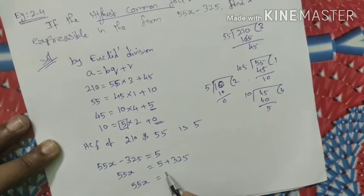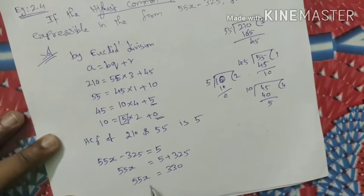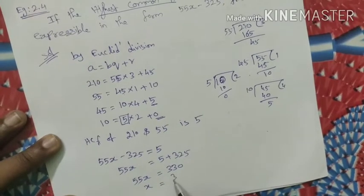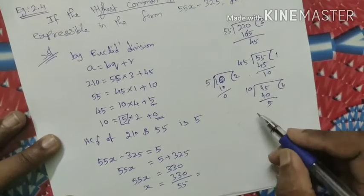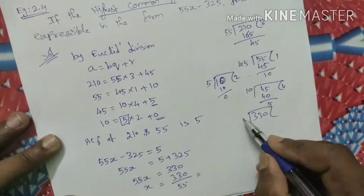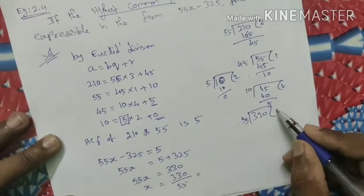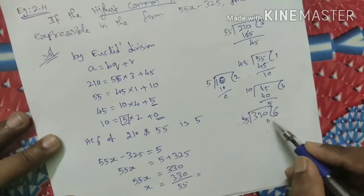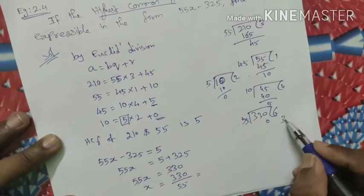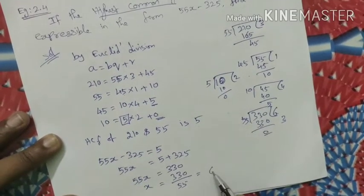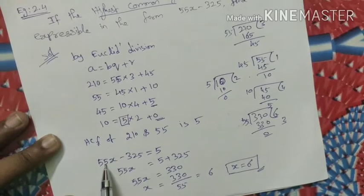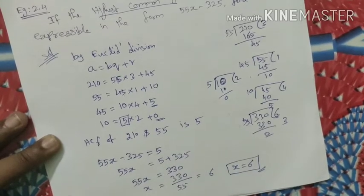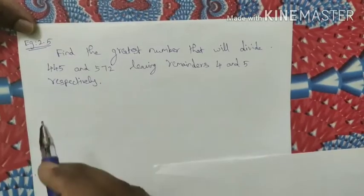55x equals 330. Dividing 330 by 55: 55 goes 6 times, giving 330 with remainder 0. So x is equal to 6. Let's verify: 6 into 55 is 330, and 330 minus 325 equals 5, which matches our HCF. The answer is x equals 6.